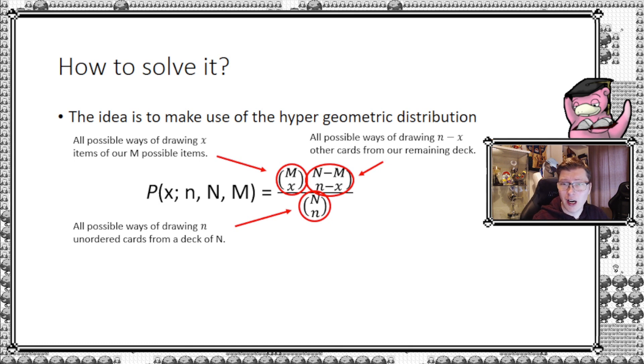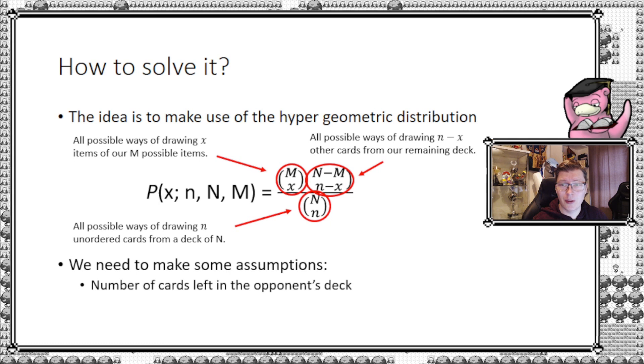The lowercase n here would just be five because Misfortune Sisters looks at five cards. We need to make some assumptions. What are the number of cards left in my opponent's deck when I play this? As the game progresses that number will change. You have to assume a number, you can always change that. Similarly, you have to assume how many items are left.